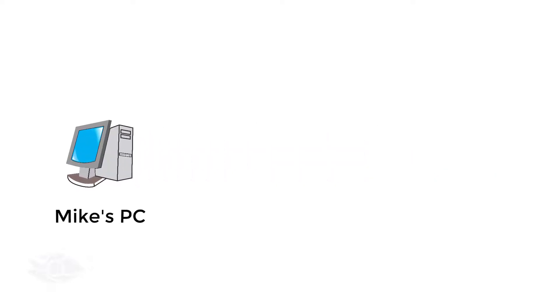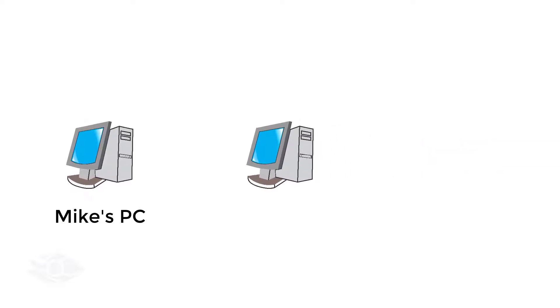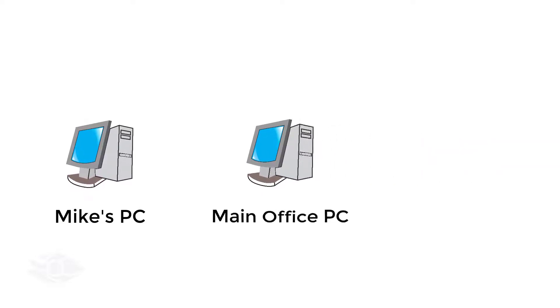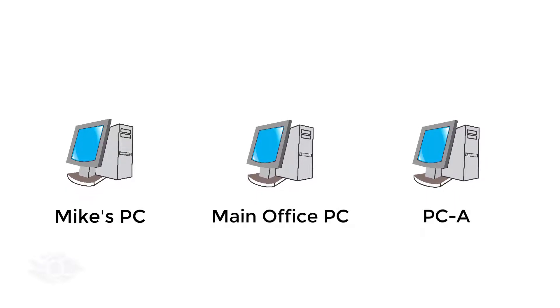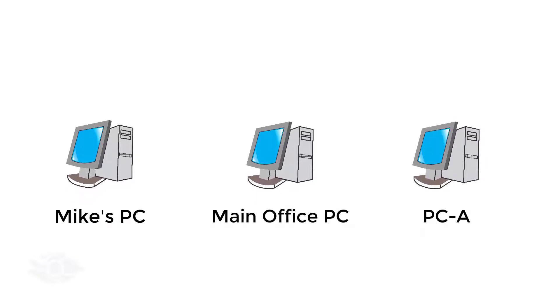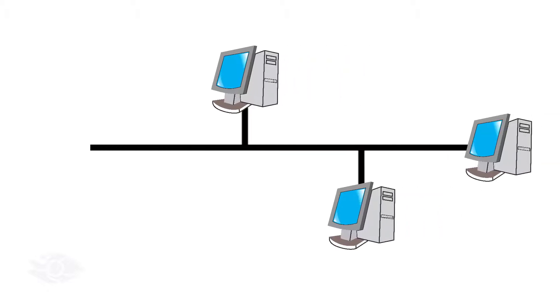In a very similar fashion, a computer can be assigned different names, such as Mike's PC, or Main Office PC, or PCA, which is used to identify the PC in different scenarios. But when a computer is connected to a network where Ethernet is used as the link protocol, it is recognized by its MAC address.